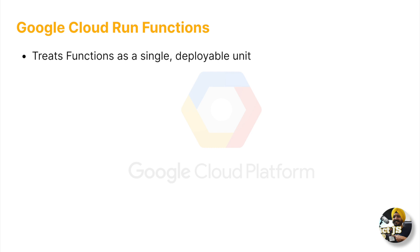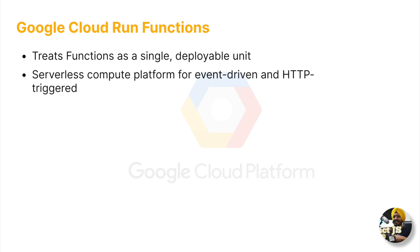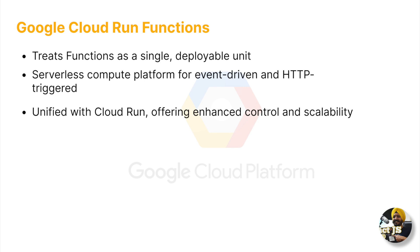Like Cloud Run, Cloud Run Functions is a serverless compute platform for event-driven and HTTP-triggered functions. It is based on Cloud Run, extending and sharing capabilities like enhanced control and scalability. Earlier, Cloud Functions was a separate product, causing confusion between using Cloud Functions versus Cloud Run, so Google recently merged the two and built Functions on top of Cloud Run.